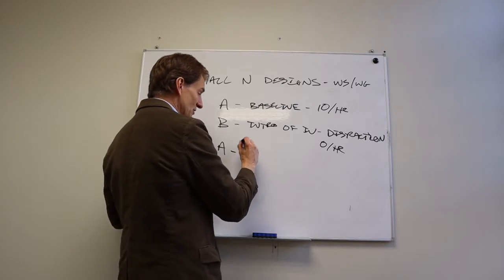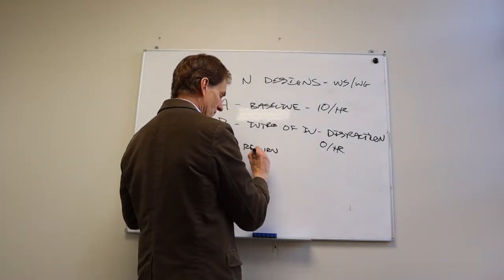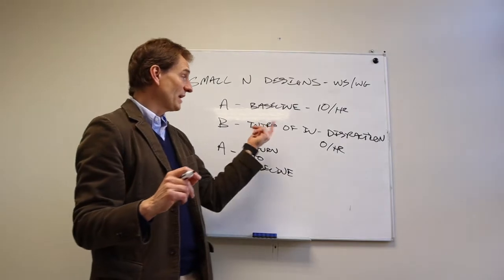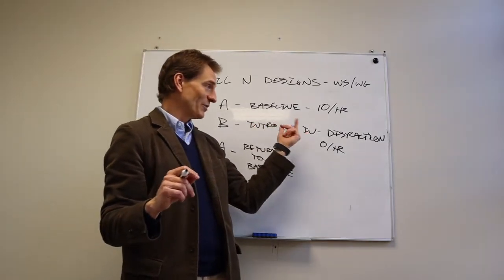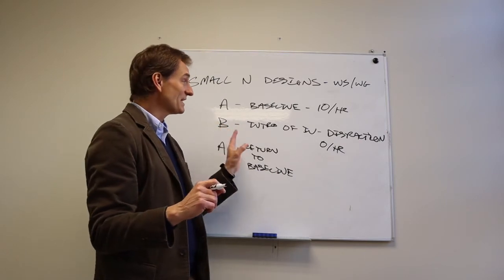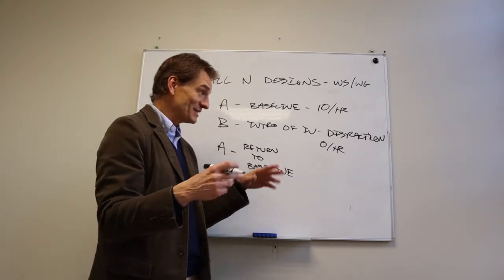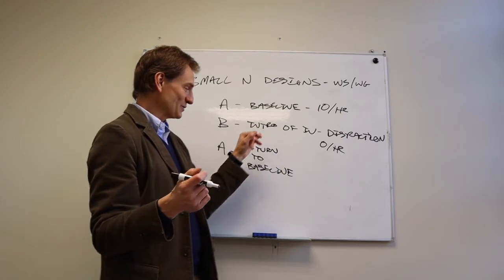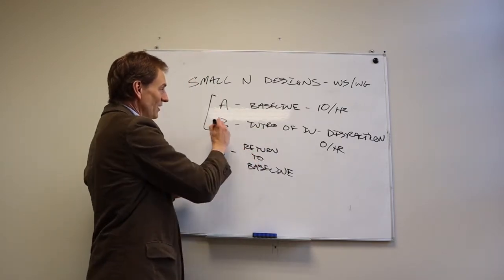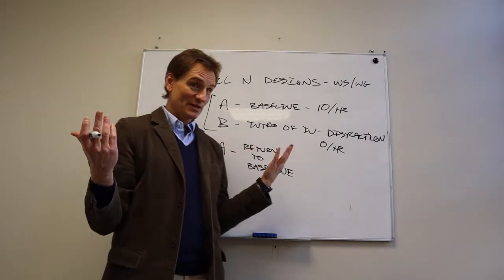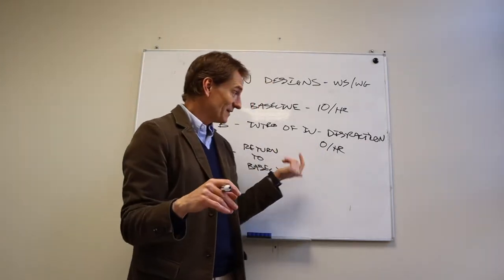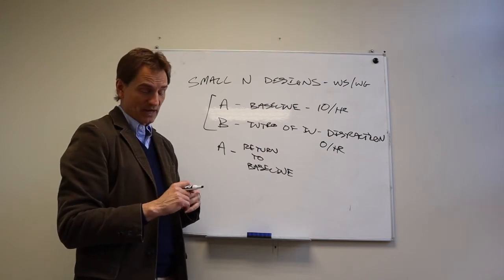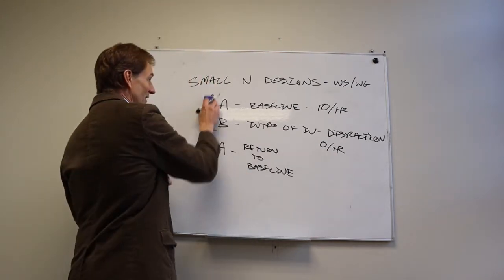The last A here is a return to the baseline. And in this case, what we do is we eliminate the independent variable, we get rid of distraction, and we see if the child goes back to biting themselves again. And there's one of the issues with small end designs, is that there's ethical issues of ever returning people to the baseline. And so they often become what are AB designs. Because if we know that the intervention's working, then we don't bother returning people to the baseline. And the point of this is to get people to stop the behavior that they were doing that was destructive.